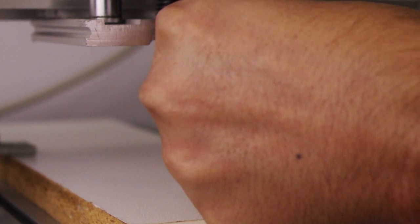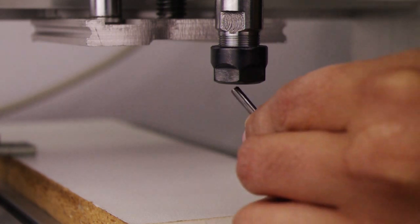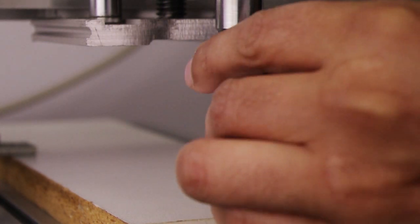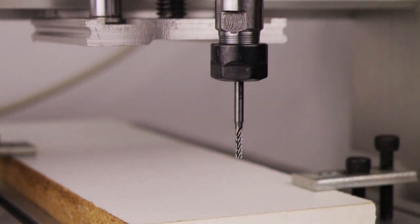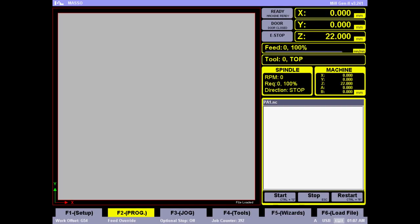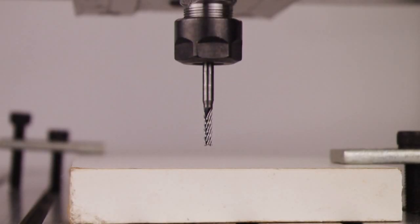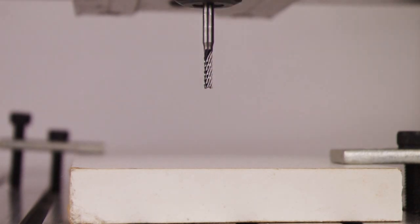Now if we try to replace the tool with a different tool, in this example we'll just remove the tool and put it back again but pull it out a bit so the height changes. Now without any calibration, if we give the same command G0 Z0, you can see that the tool went all the way through. This would damage the job.